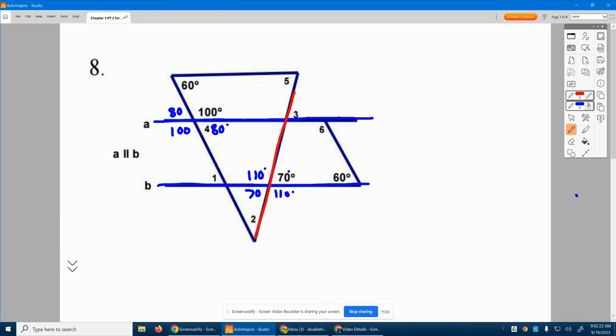That means all of these right here can be picked up and moved where the transversal hits the other parallel line right there. So then we have 70, 110, 70.